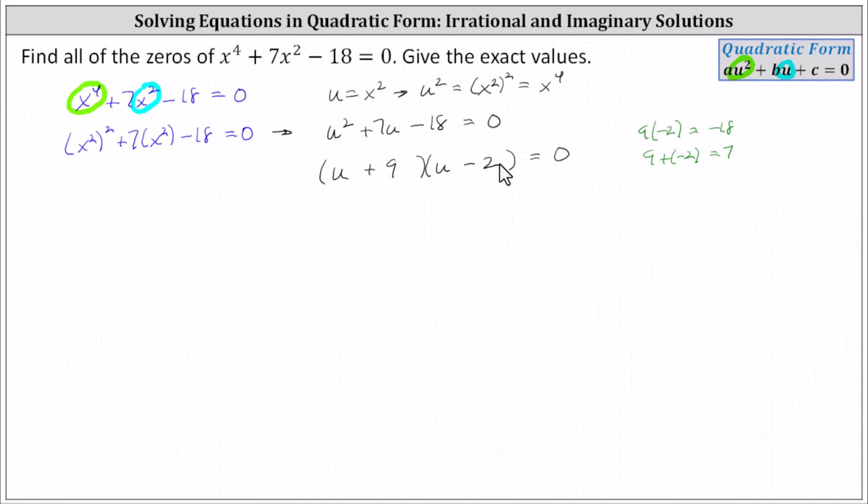But again, at this point, we know we're solving for x, so let's write these two factors back in terms of x, which gives us x squared plus nine as one factor, and a second factor of x squared minus two.